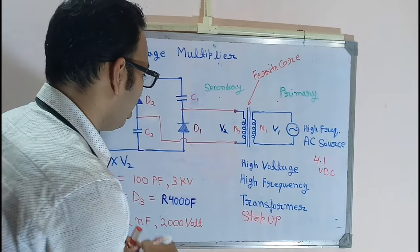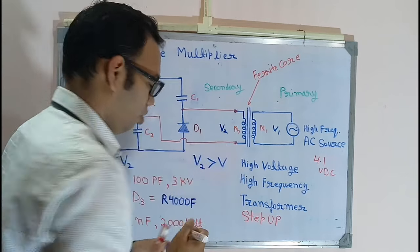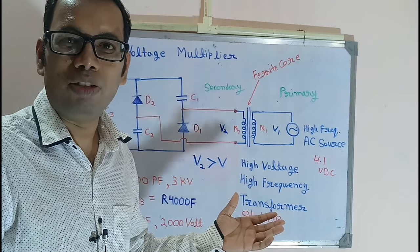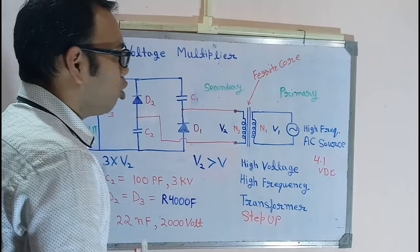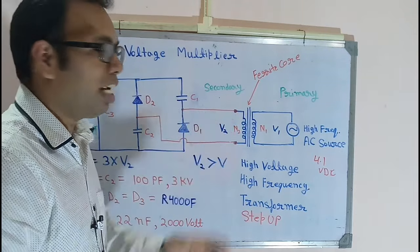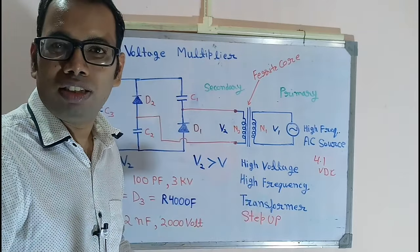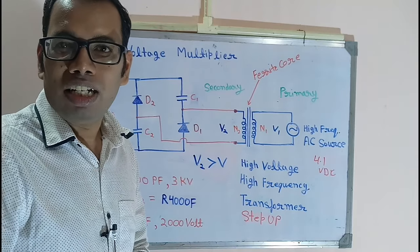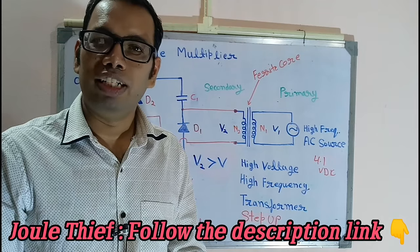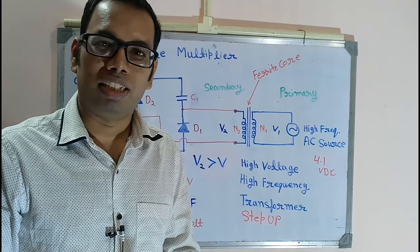The condition here is that V2 is greater than V1. This same circuitry is also used in a mosquito bat. The mosquito bat uses a 4V DC battery, and we convert that voltage to V2. To generate the AC source there, a separate circuit called the Joules Thief circuit is used. I will provide the video link for that circuit in the description box.